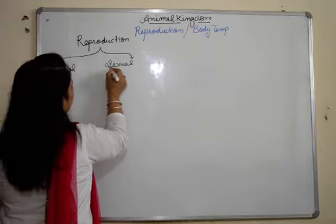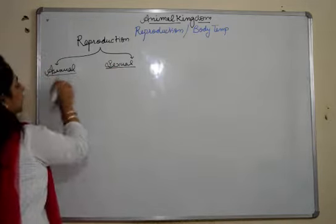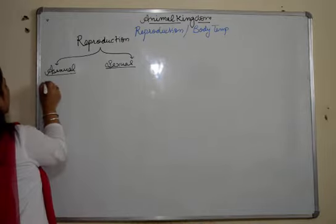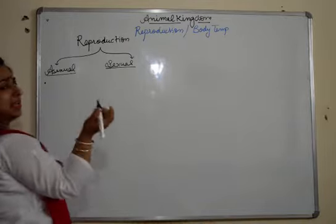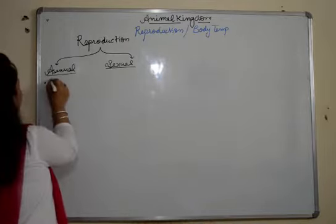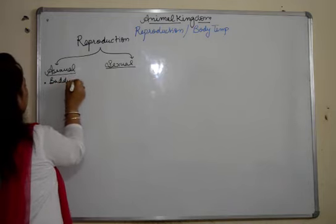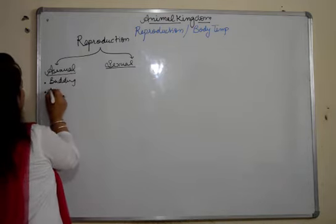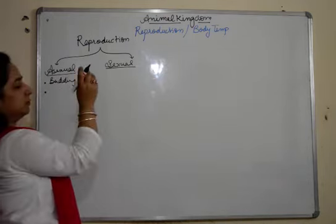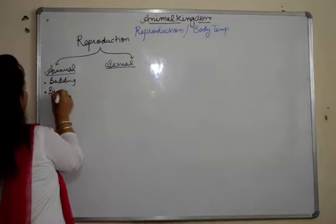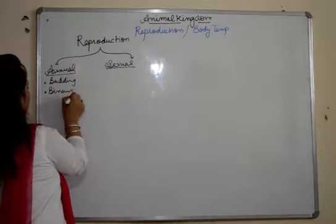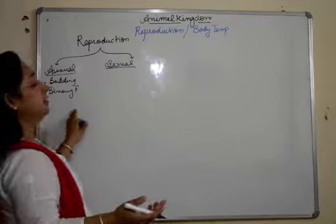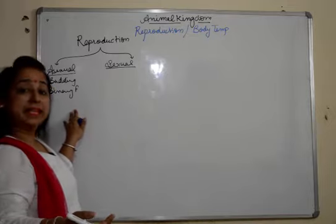Organisms which undergo sexual reproduction and those which undergo asexual reproduction. When we talk about asexual, there can be budding, binary fission, multiple fission, and so on. These are the types of asexual reproduction.